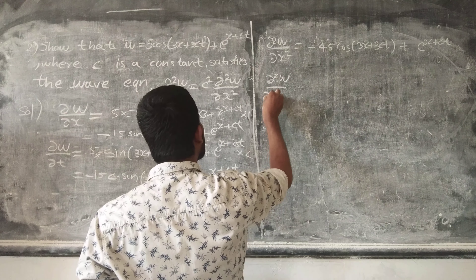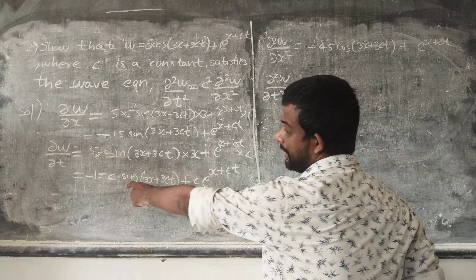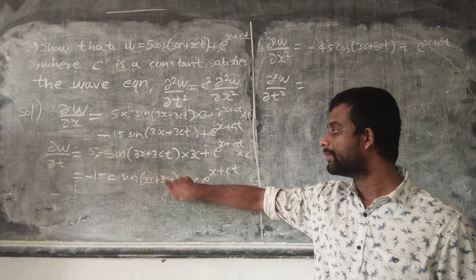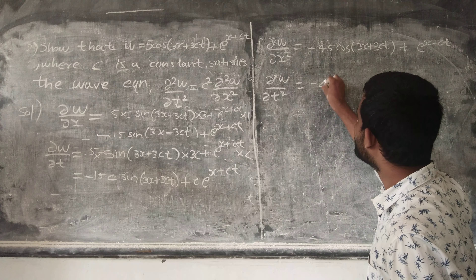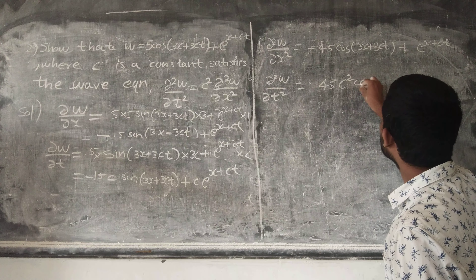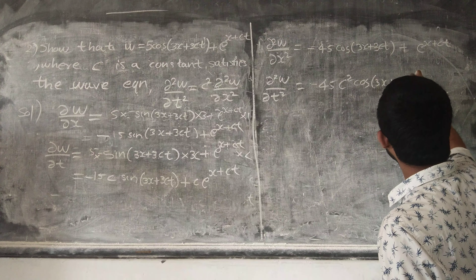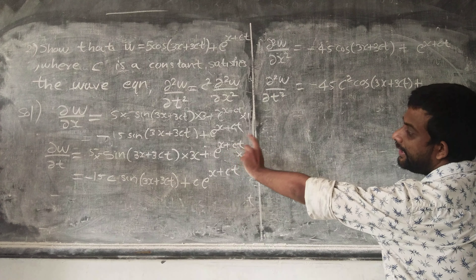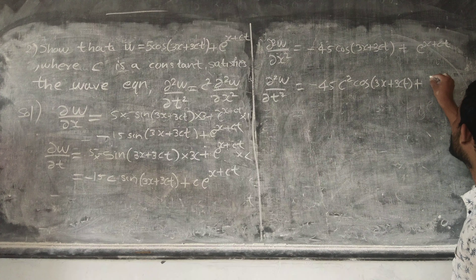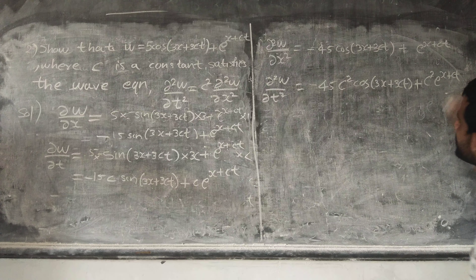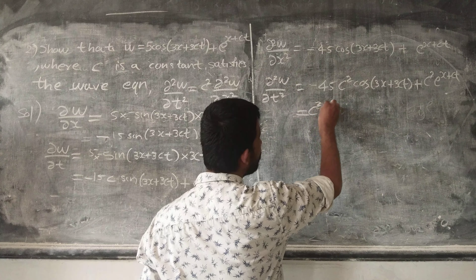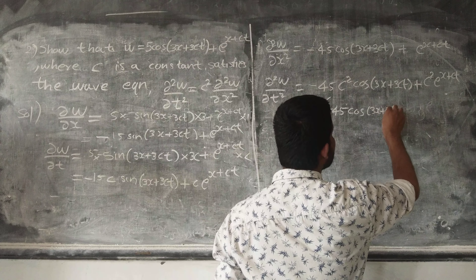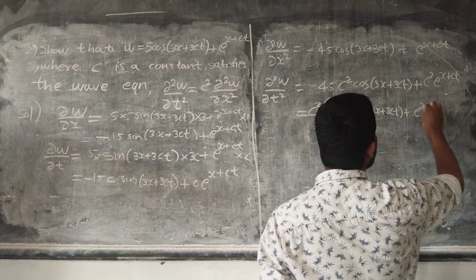Now computing dou square w by dou t square: differentiating dou w by dou t with respect to t gives minus 15c times 3c cos of (3x + 3ct), which is minus 45c square cos of (3x + 3ct), plus c times e raised to (x + ct) into c, giving c square times e raised to (x + ct). So dou square w by dou t square equals c square times minus 45 cos of (3x + 3ct) plus e raised to (x + ct).